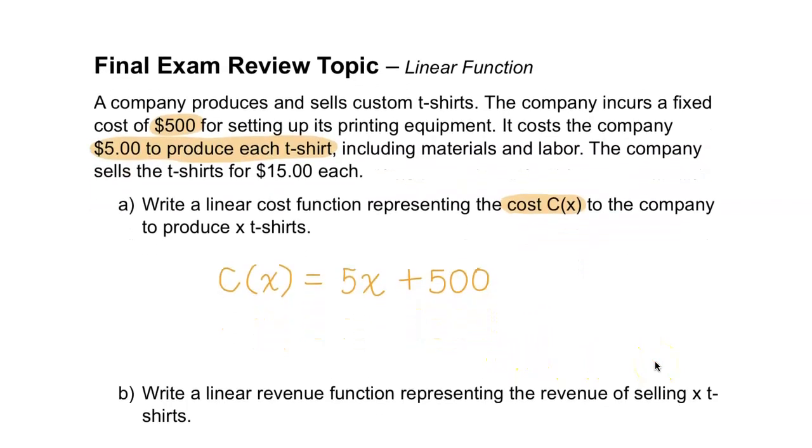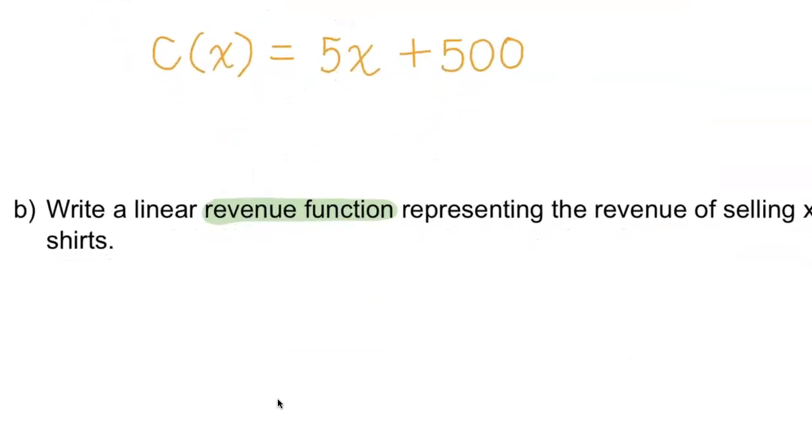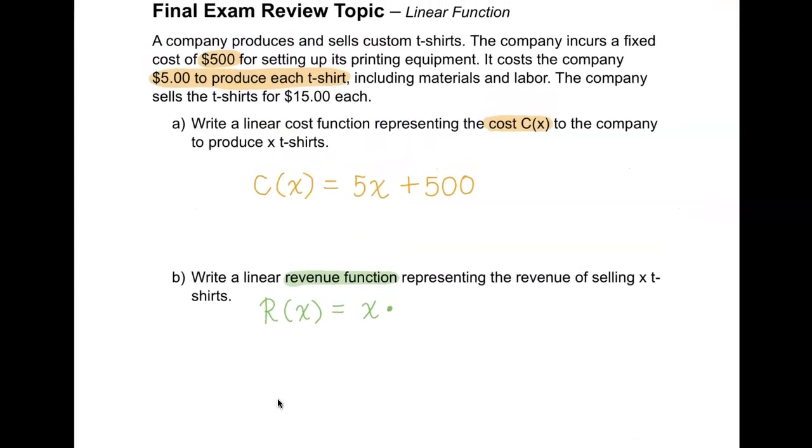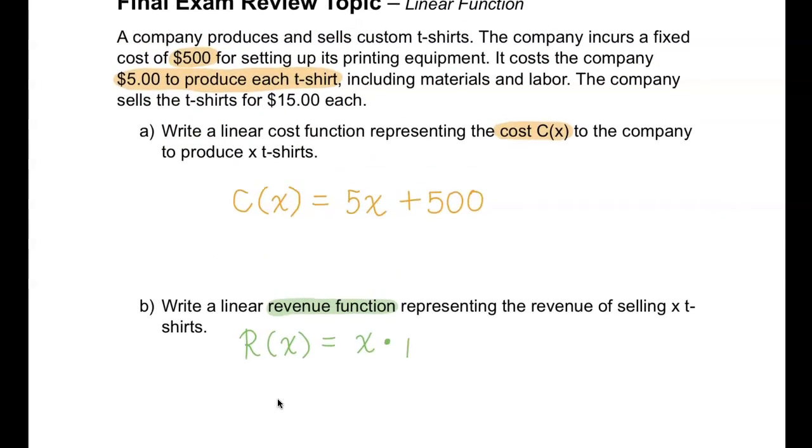Now let's go down to B. They want us to write a linear revenue function. The revenue function is going to be how many you sell—that will be x—times the price of this t-shirt. Let me take a look. Did they give us a variable for how expensive this t-shirt is? I'll go ahead and say price of t-shirt.